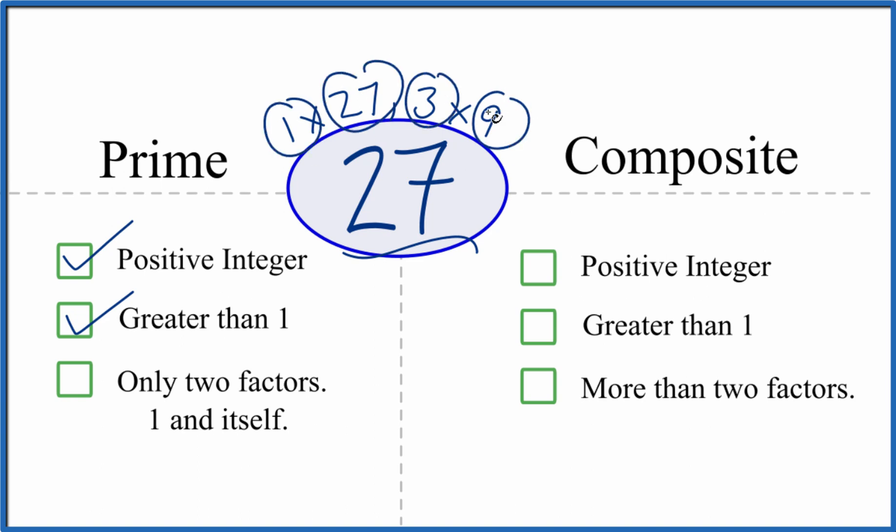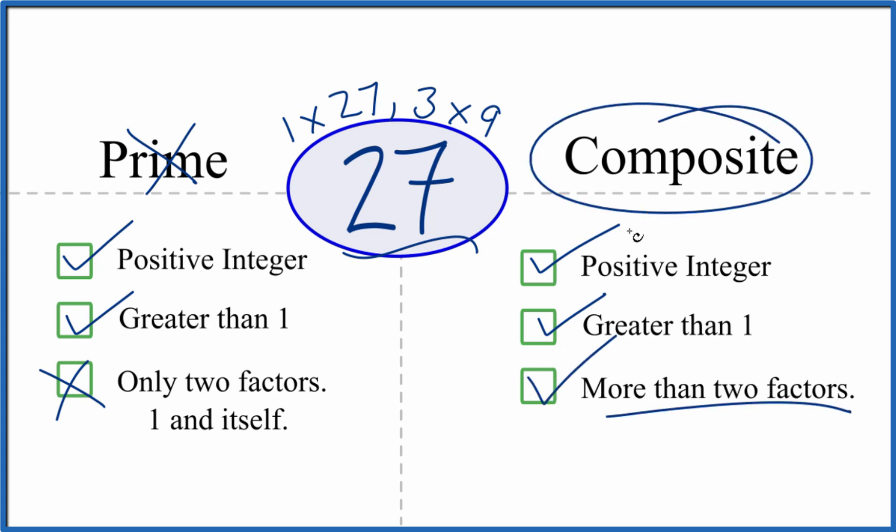There's 1, 3, 4 factors. That means that 27, it's not a prime number. Is it composite? Positive integer greater than 1, and we have those four factors, more than two factors. 27, that's composite.